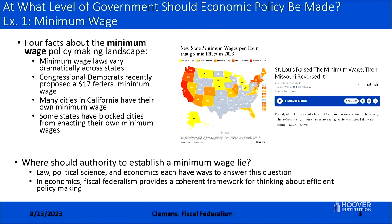Second, congressional Democrats recently proposed a $17-an-hour federal minimum wage, escalating from the previous 'Fight for 15' mantra. Third, many cities in California, elsewhere on the West Coast, New York City, and Chicago have their own minimum wages. Fourth, in some states, state governments have taken efforts to block cities from enacting minimum wages in excess of the state minimum wage.